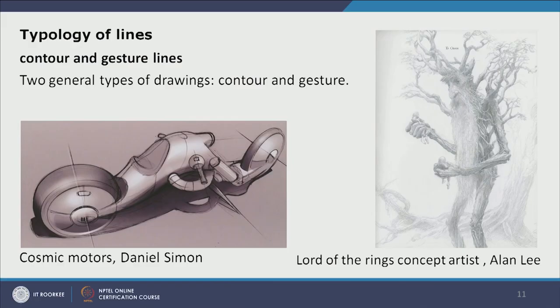Types of lines can also be defined by the way they define form or shape. One can be a contour line and another a gesture line. Contour line actually defines a shape or form — it follows the outer boundary of a shape or form. Gesture line just flows freely. In Daniel Simon's automobile design, the lines follow the edge of a shape or form — this is a contour line, clearly defining the contour of the shape.